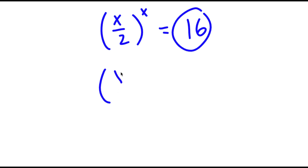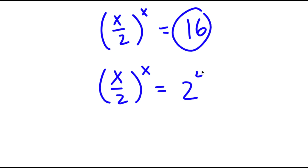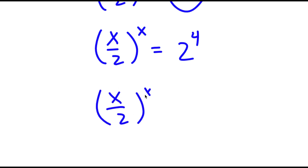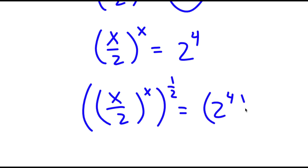So now I have (x/2) to the power of x is equal to 2 to the power of 4. Now I'm going to take the power of 1/2 on both sides. So now I have (x/2) to the power of x, to the power of 1/2, is equal to 2 to the power of 4, to the power of 1/2.